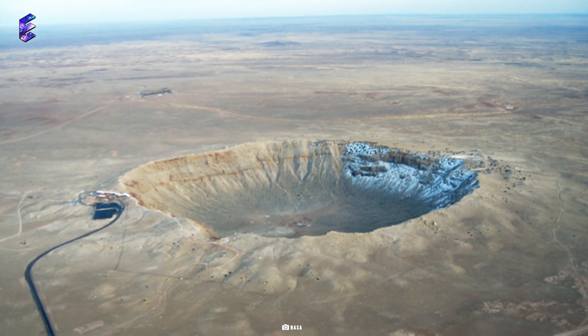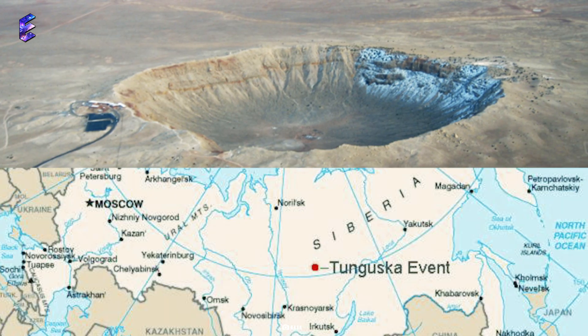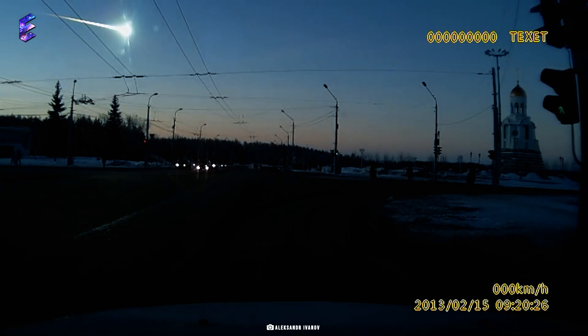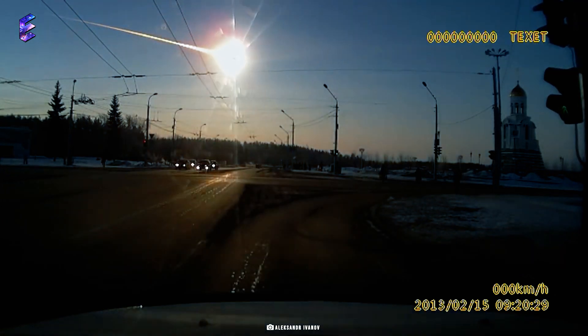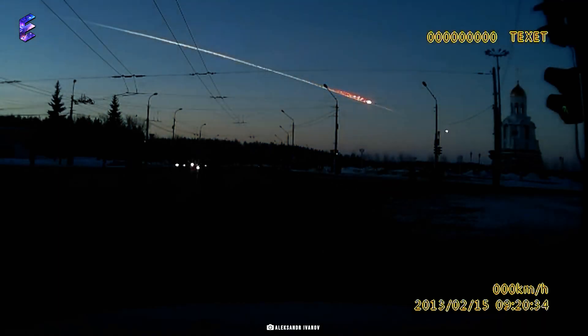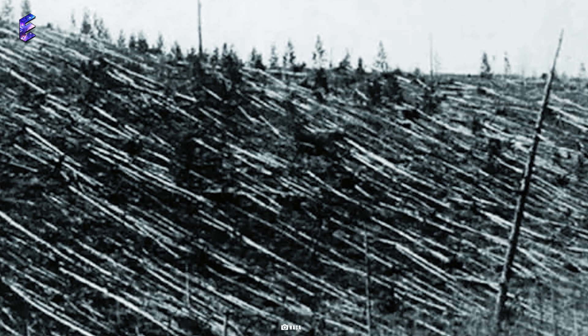While the first most impactful asteroid collision to have hit Earth was Tunguska Bolide in 1908, the other took place in 2013. The impact of the 1908 asteroid attack resulted in the flattening of an estimated 80 million trees over an area of 2,150 square kilometers of forest.